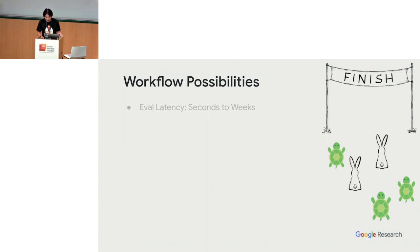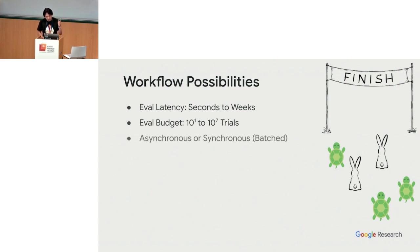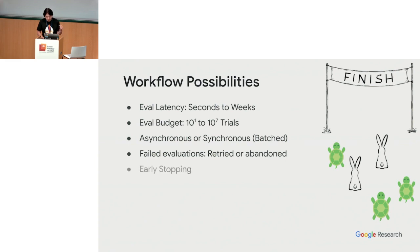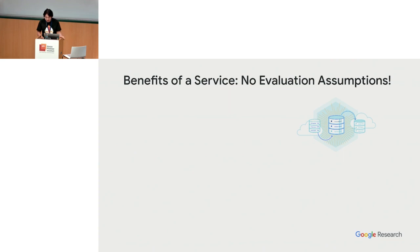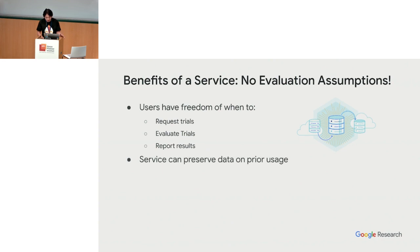The key is that all these are very different workflows with different possibilities: evaluation latency can range from seconds to weeks, evaluation budget can be ten trials or tens of millions, and it can be either asynchronous or synchronous — meaning evaluations are performed in batches. Some evaluations can even fail. There are also features like early stopping to stop training of a model if it's deemed too low-performing.